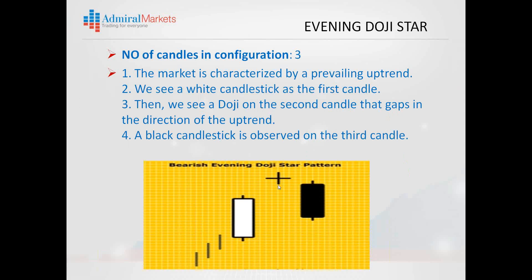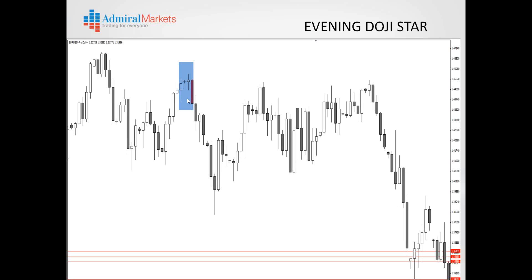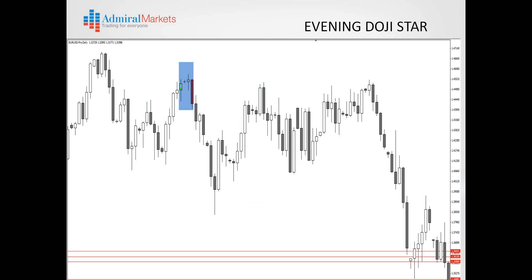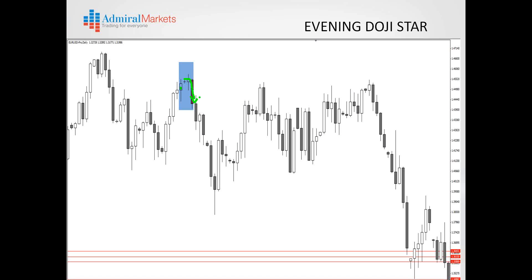The evening doji star — three candles. In an uptrend we have a white candlestick as the first candle. Then we see a doji on the second candle that gaps in the direction of the uptrend. Then a black candlestick is observed on the third candle. Here's a great example on the euro-dollar, the same period — perfect examples of turning spots at the tops. The evening star formed: we got that bullish candle, then a doji, then down the currency went.